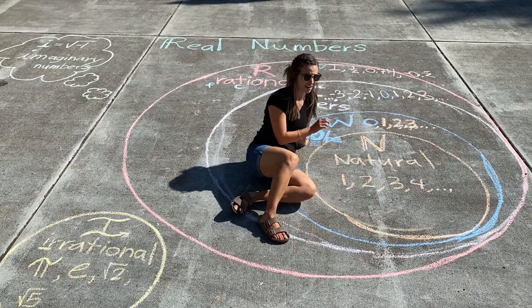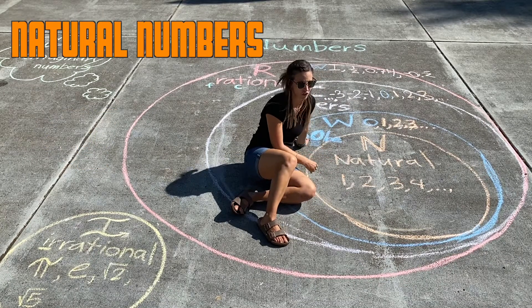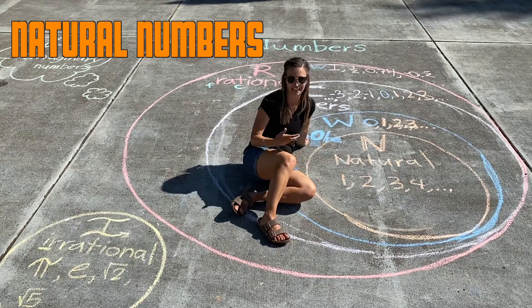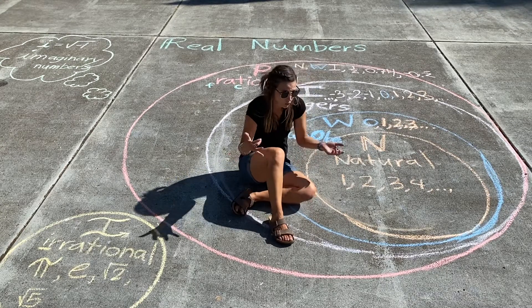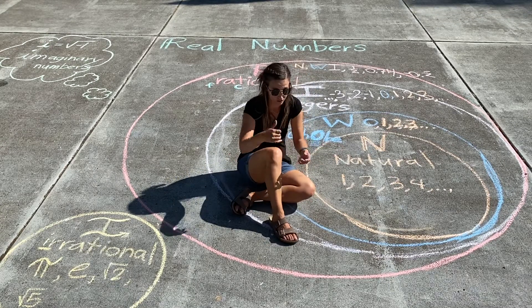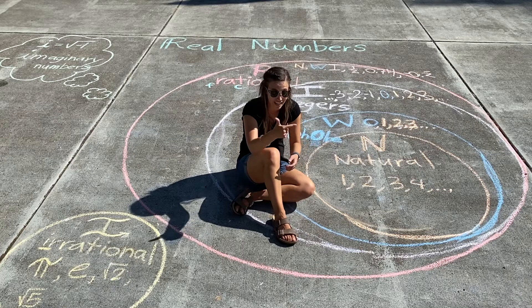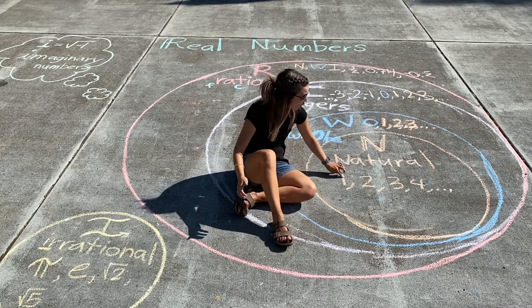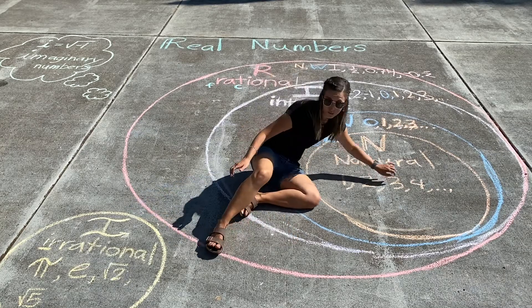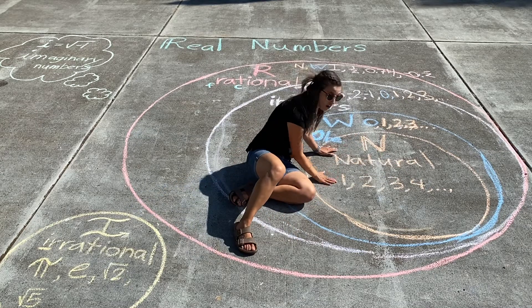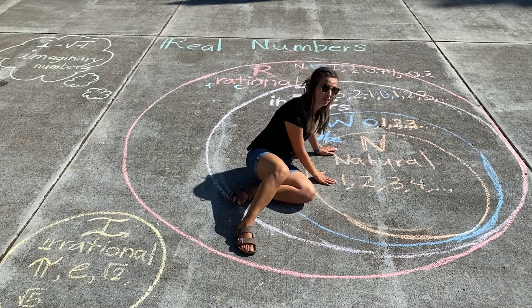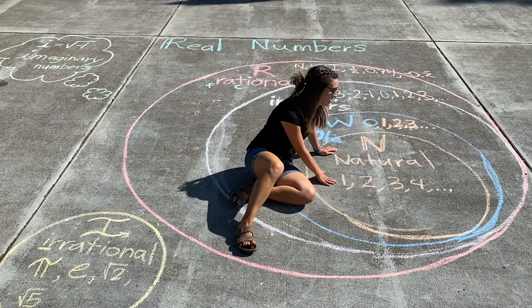Natural numbers are kind of like in nature. They're the first numbers that you've learned — like when you were a little kid or a toddler and you were counting on your fingers: one, two, three, four, and so on. That's what our natural numbers subset are.